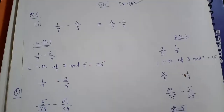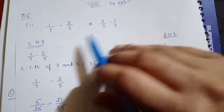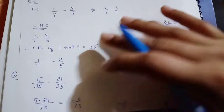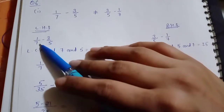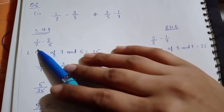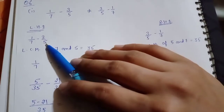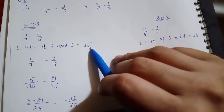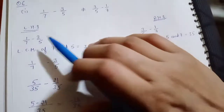Now see the solution of Part 1. There are two sides — left hand side and right hand side. I will solve them separately and then decide if they are equal or not. First I am taking the left hand side: 1 minus 7 minus 3 by 5. The denominators are not equal, therefore I will take the LCM. LCM of 7 and 5 is 35. Both are prime numbers so there is no common factor — you can directly multiply: 7 times 5 equals 35.